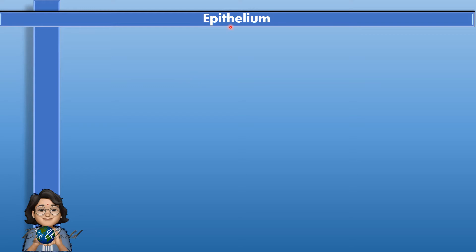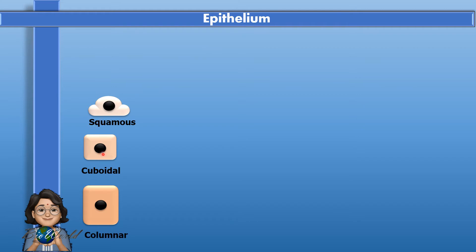Now we'll familiarize ourselves with the specific epithelial cells that make up the epithelial tissue. The cells include squamous epithelium, cuboidal epithelium, and columnar epithelium. The squamous epithelial cells are quite flattened except for the center, because it needs to provide space for the nucleus. Epithelial tissues with squamous epithelium are suitable for exchange of substances because this shape provides a larger surface area. The cuboidal epithelium, which is cube in shape, and the columnar epithelium, which is elongated, are suitable for epithelial surfaces that require protection.